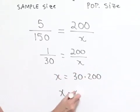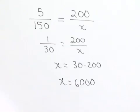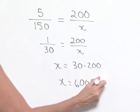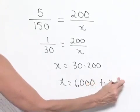And so x is going to equal the value of 6,000, which tells us that we can, using this sample, estimate that we have 6,000 Tule elk.